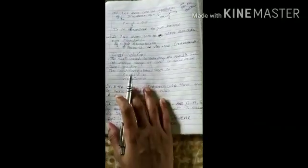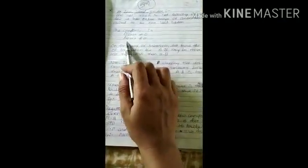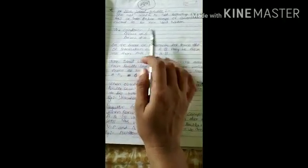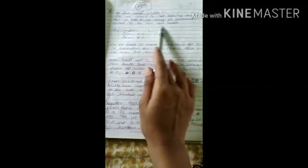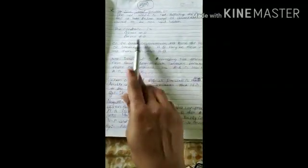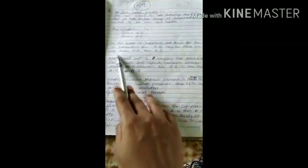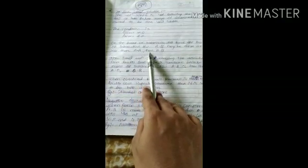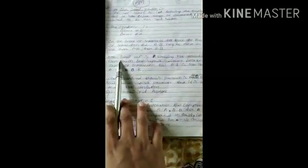Non-ideal solution: Here delta V mix is not equal to zero and delta H mix is not equal to zero. The solution which is not following Raoult's law at entire range of concentration is non-ideal solution. On basis of intermolecular force of interaction, A-B may be more or less than A-A and B-B. In ideal we saw it should be equal, but here they may be more or less.